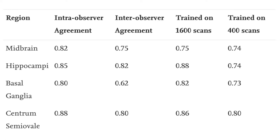These scans were visually scored by an expert rater, who counted the number of PVS in each brain region. The agreement between visual and automated scores was found to be excellent for all regions.